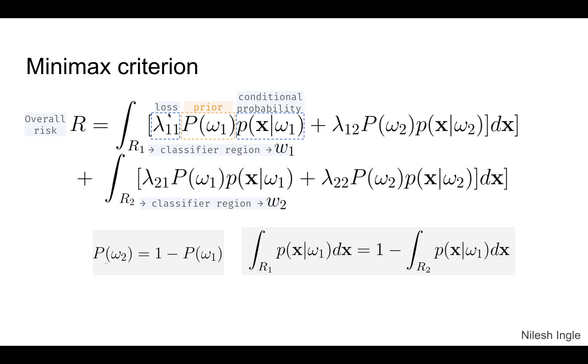The overall risk is the integral over R1 and then added to the integral over R2 for the products of loss and the conditional and prior probabilities that are shown here. So R1 is the region where we classify the data point, if it exists in the R1 space, as belonging to the class omega 1, otherwise it's belonging to class omega 2.